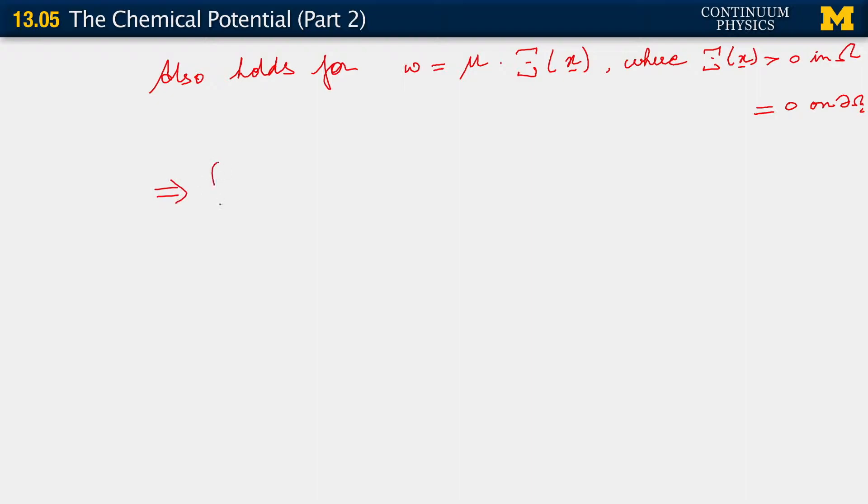What this gives us then is that integral over omega, mu squared chi dv equals 0. Observe that there are no boundary terms in this expression.